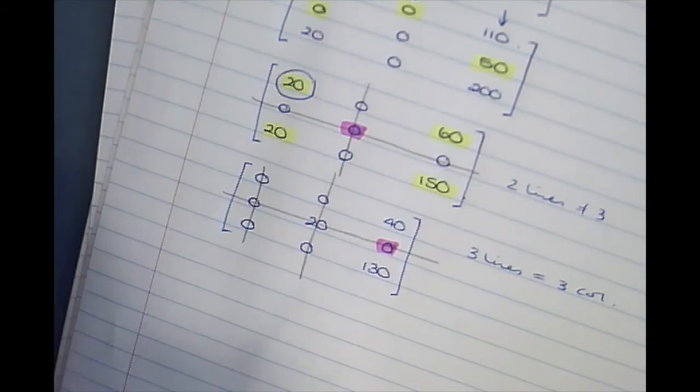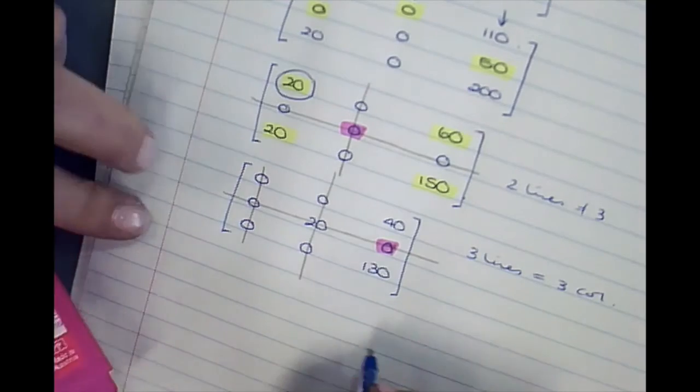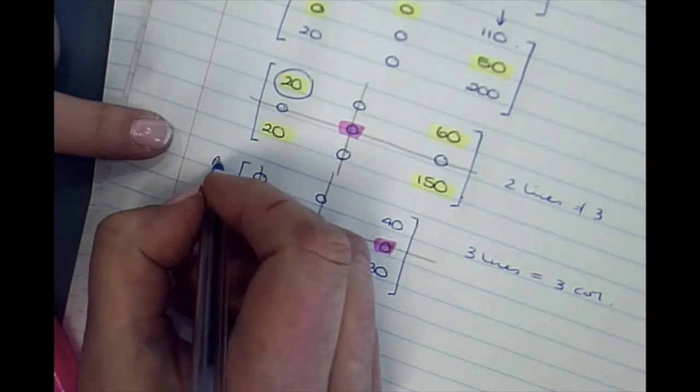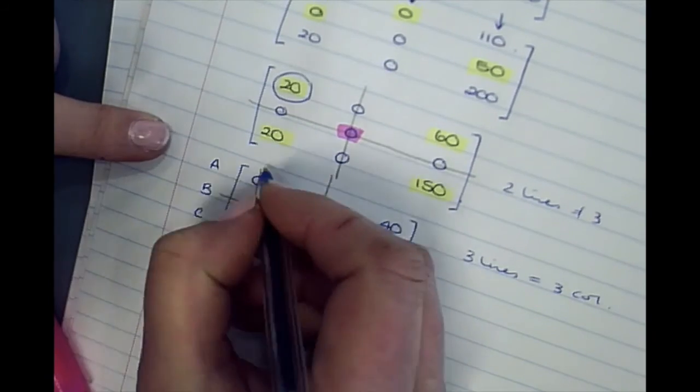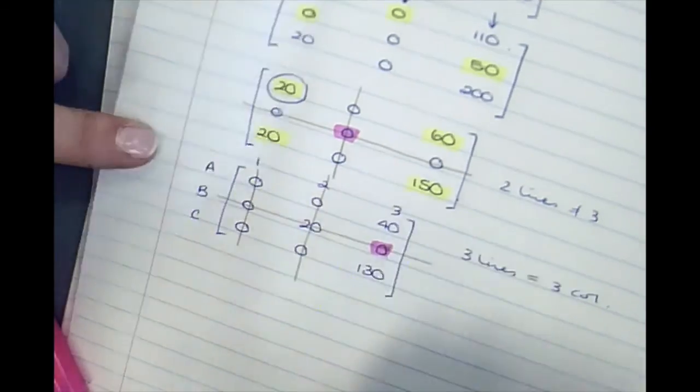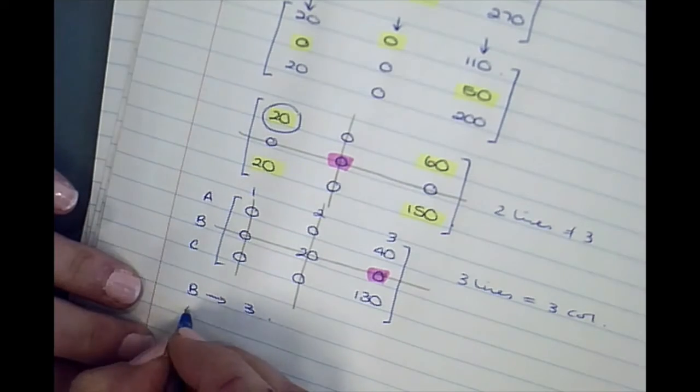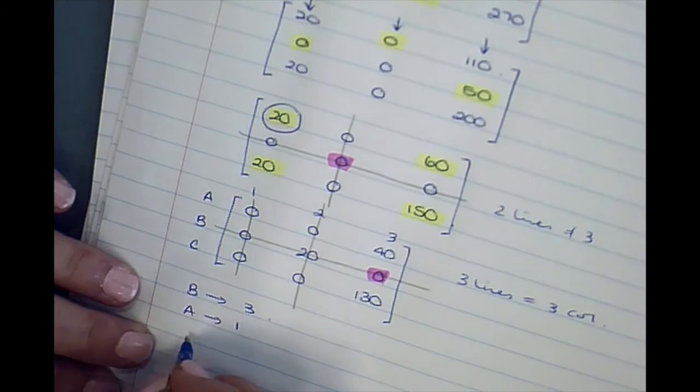Okay, so this is A, B, C. So B has to go to 3, so A could go to 1 and C could go to 2.